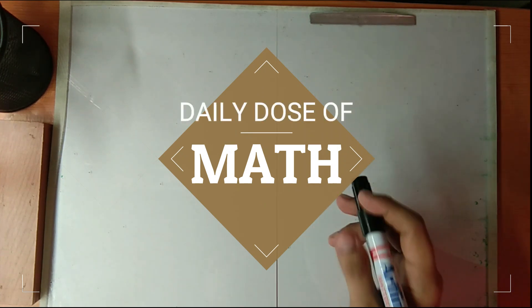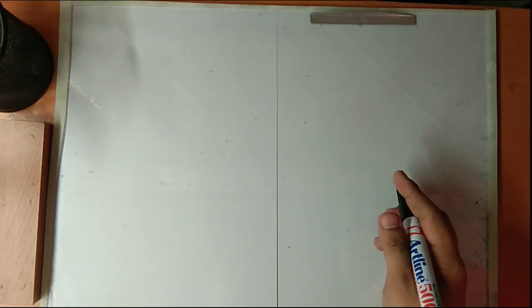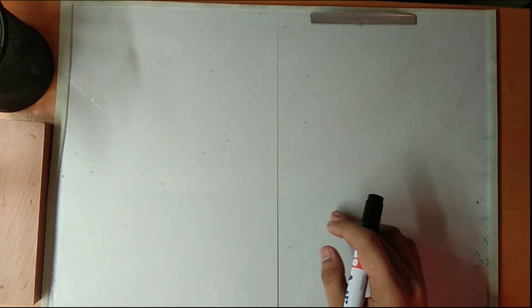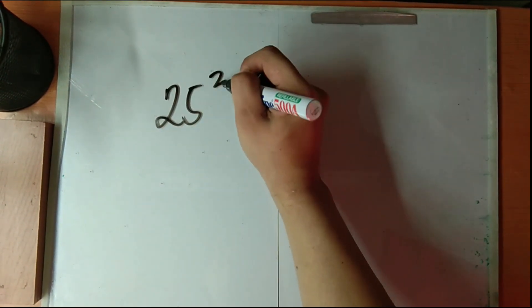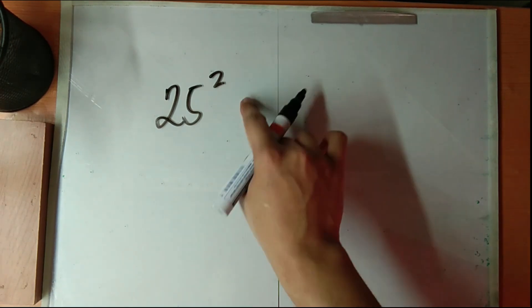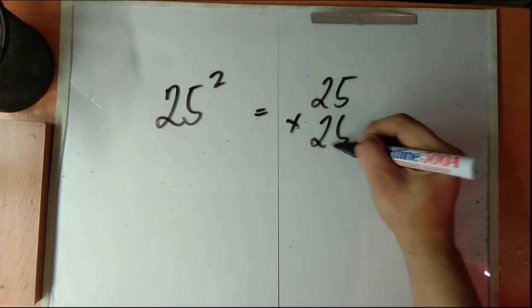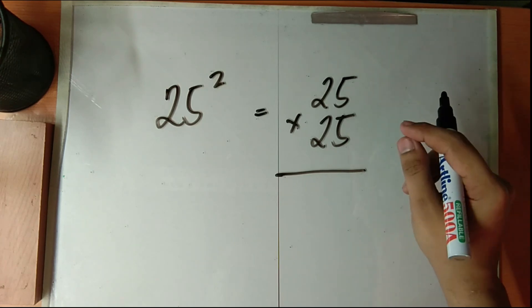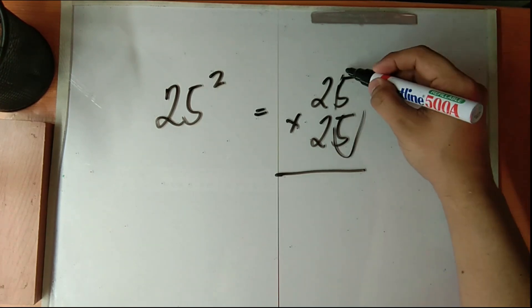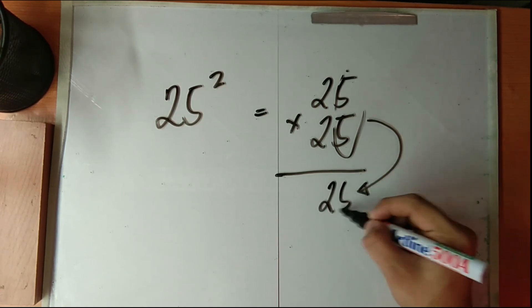Time for our daily dose of math. So here, I will teach you how to get the square of a two-digit number ending in 5 in just 3 seconds. So example, let's say we have 25 squared. You know that 25 squared is the same as 25 times 25. Now here's the trick. Multiply the unit's digit. This is 5 times 5. Place it in your answer, in the product. This is 25.